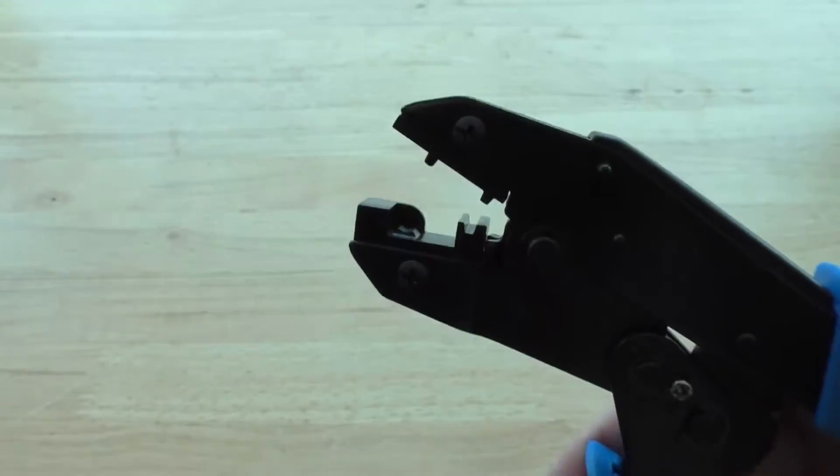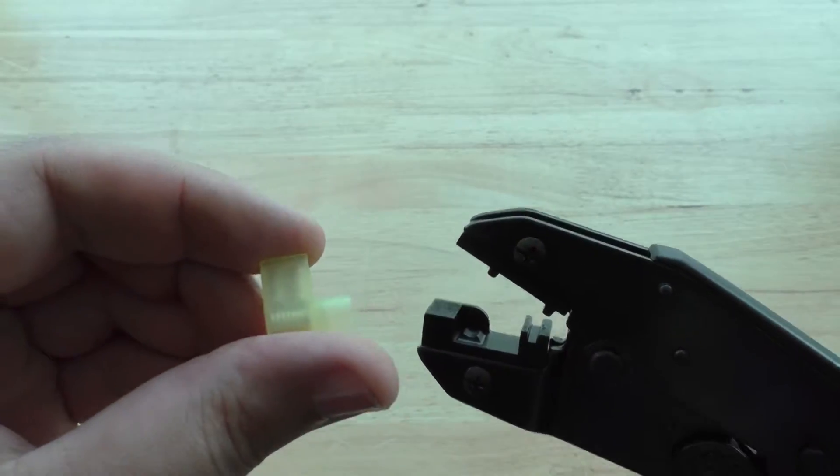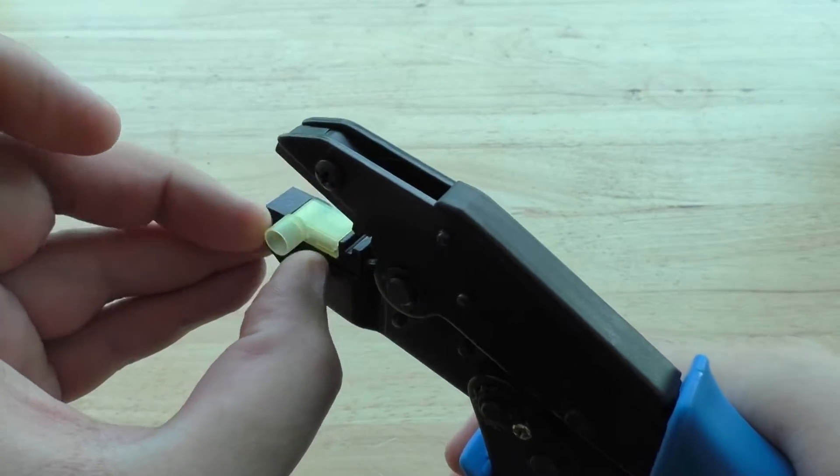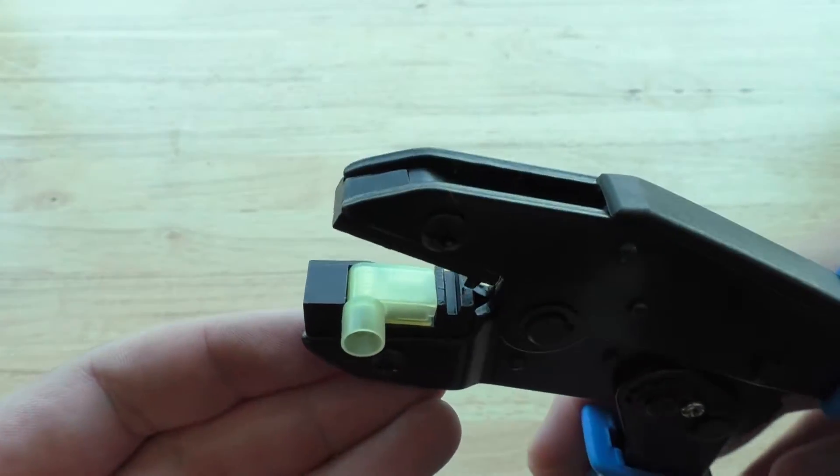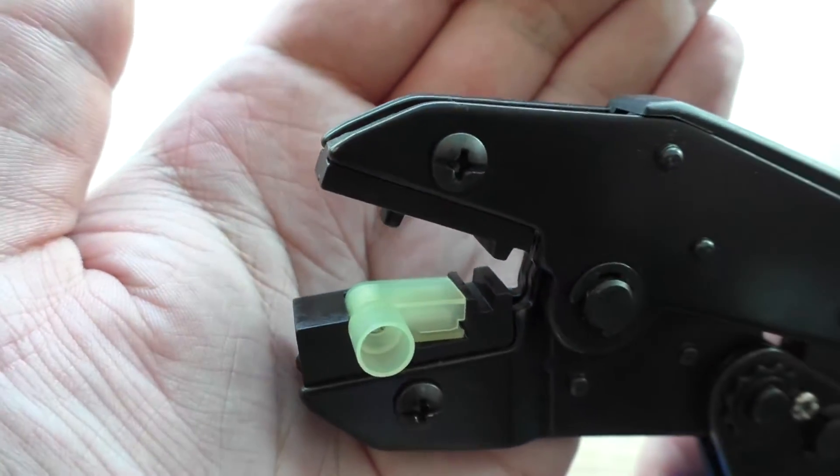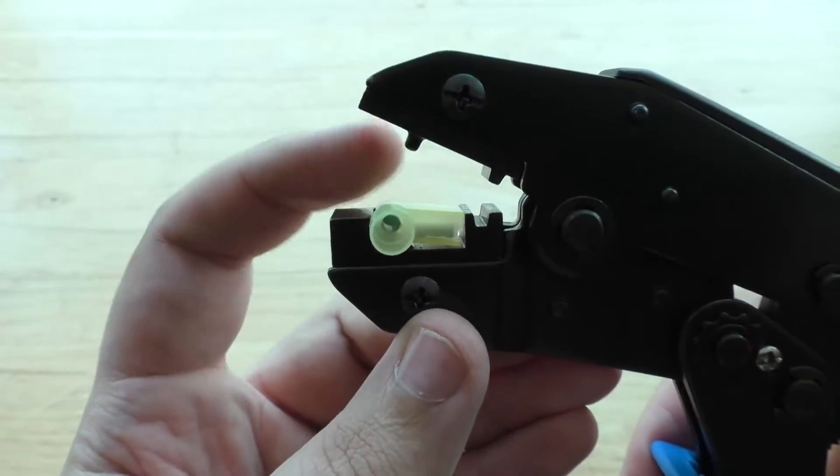We'll grab our FLDNY 5-250 insulated flag terminal and slot it into the crimping die like so. On top you'll see a little pin that will press down on the barrel of the terminal and crimp it.